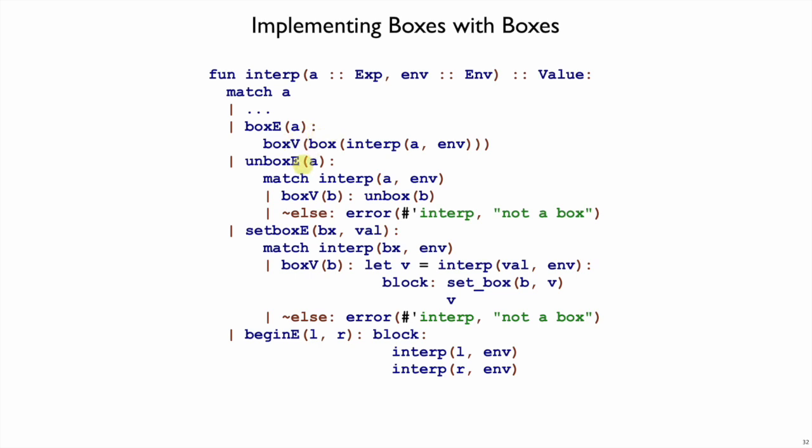If we do things that way, then when we do unbox e a, we have an expression a to interpret. Hopefully this a gives us back a box v. And that means we can do a match to see if we get a box v or something else. If we get something else we just complain. But if we get a box v,